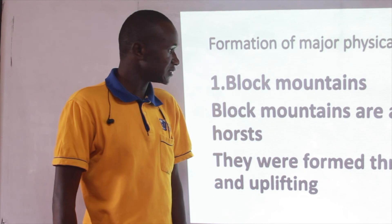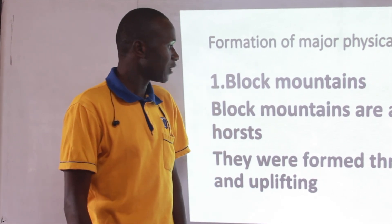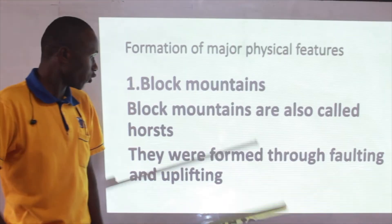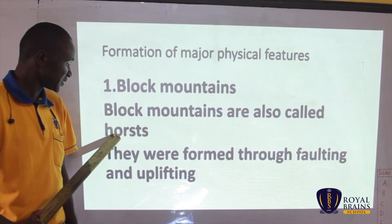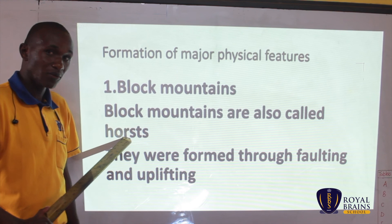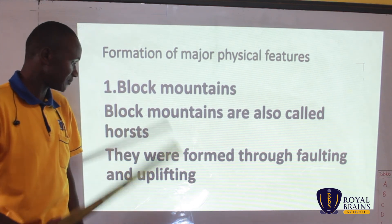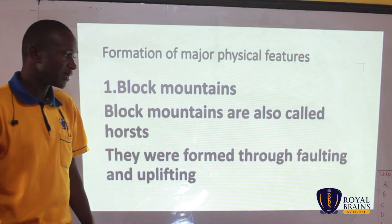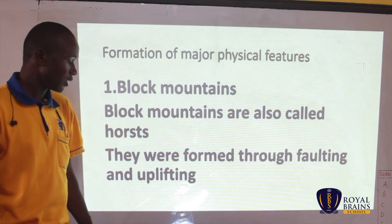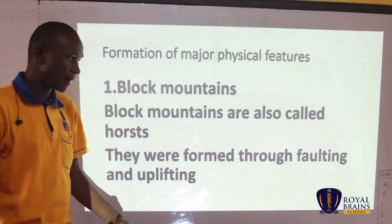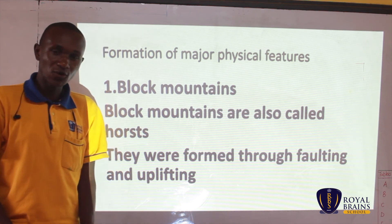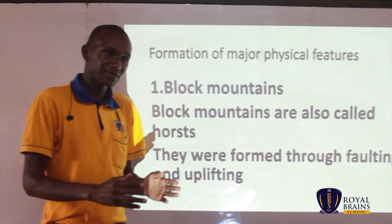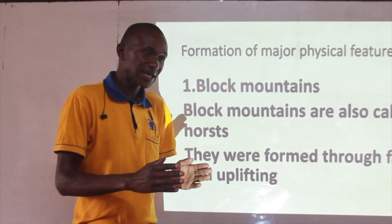Block mountains are also referred to as horsts — that is the same key word as block mountain. We say also that they were formed through the process we call faulting and uplifting. When we talk about faulting, you realize that on the earth's surface, when we have just the normal land, at times we tend to have cracks.